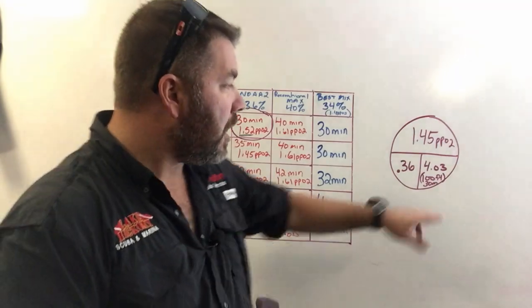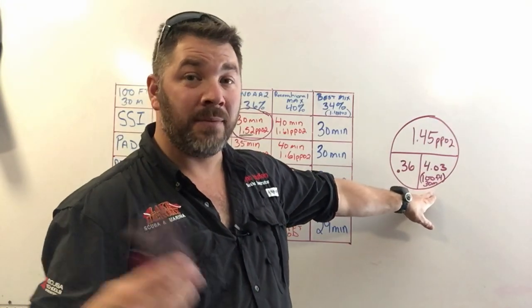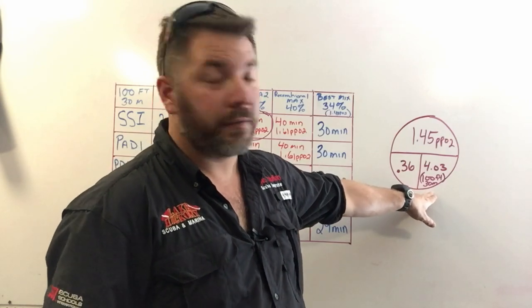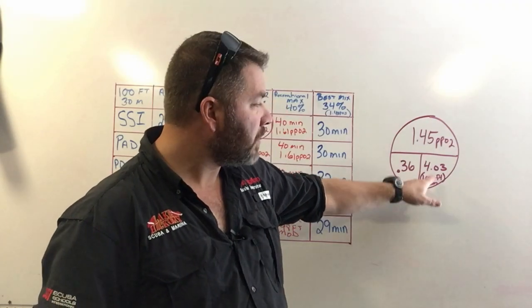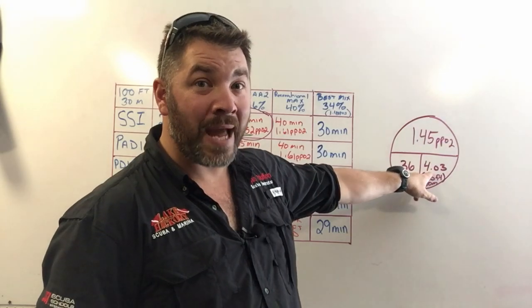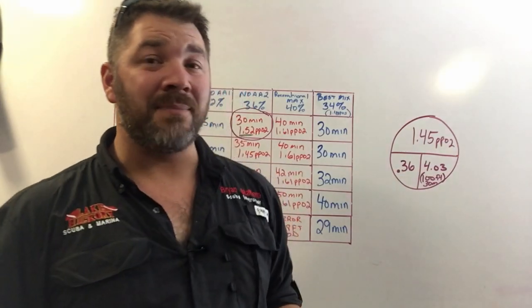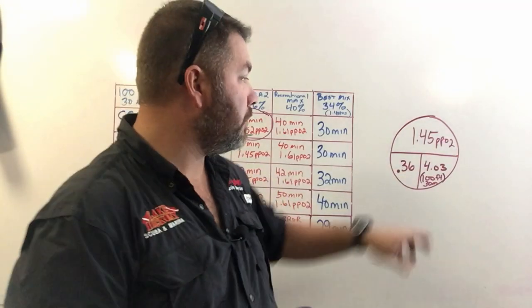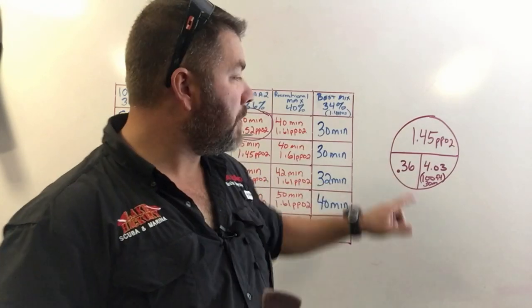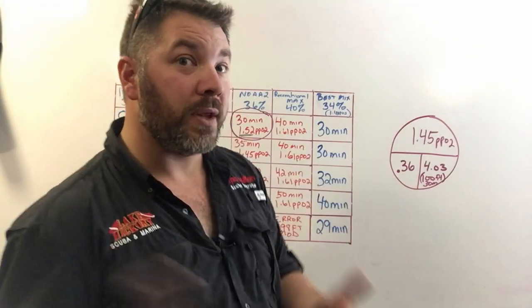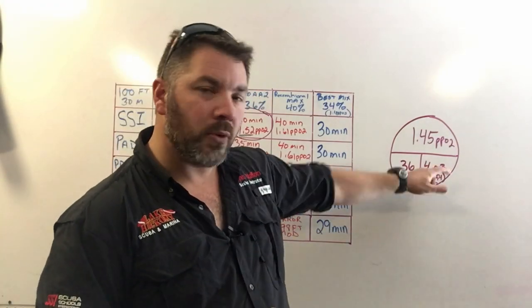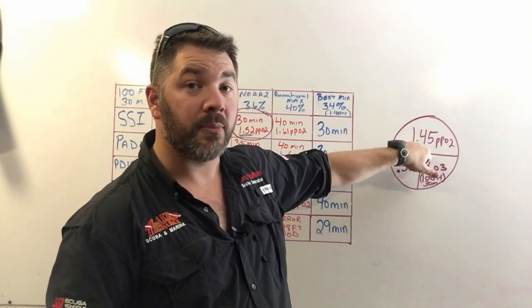If you're interested in being able to determine what your partial pressure of O2 at any given depth is, all you have to do is take your depth and atmospheric pressure. So we're using 100 feet of depth or 30 meters of depth which is 4.03 atmospheres, and you simply times it by the blend that you're going to be breathing which is 36 percent.